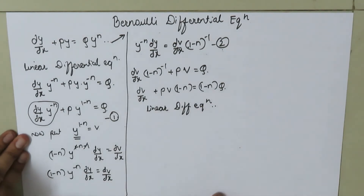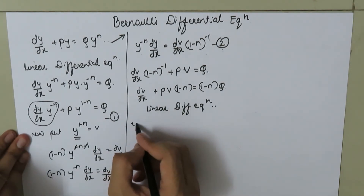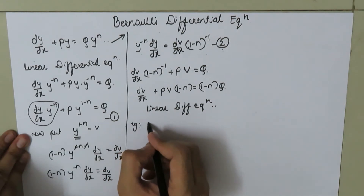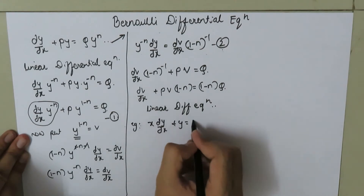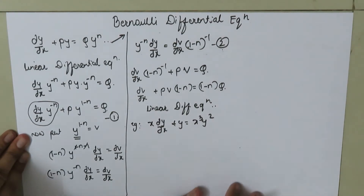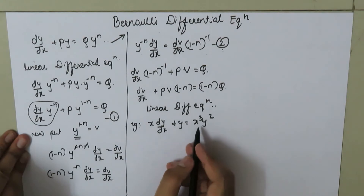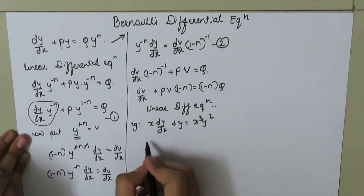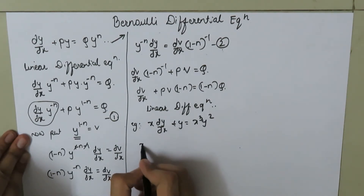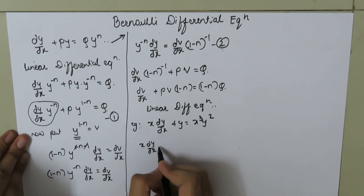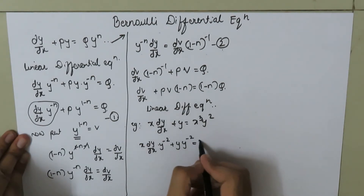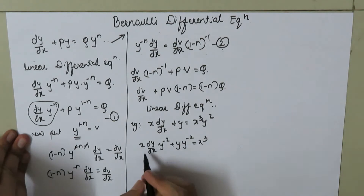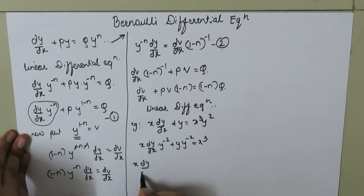Let's take an example to understand Bernoulli's differential equation. The example is: x times dy/dx plus y equals x cubed times y squared. We divide through to make the coefficient of x cubed equal to 1, so x times dy/dx times y to the power negative 2 plus y times y to the power negative 2 equals x cubed.